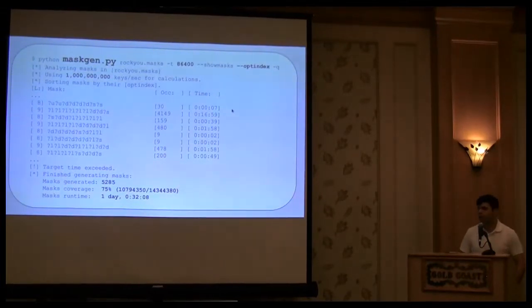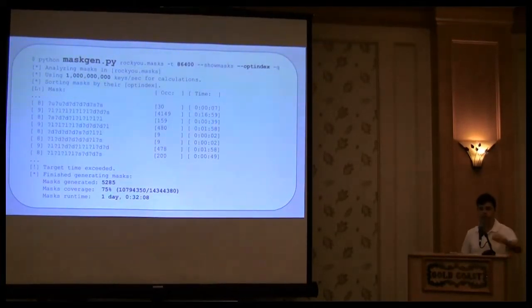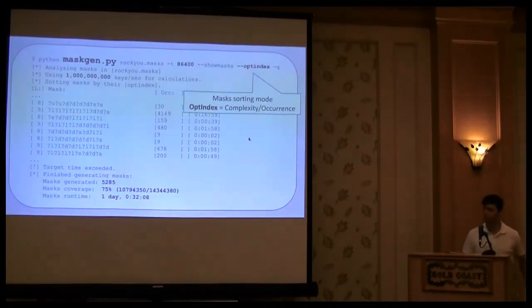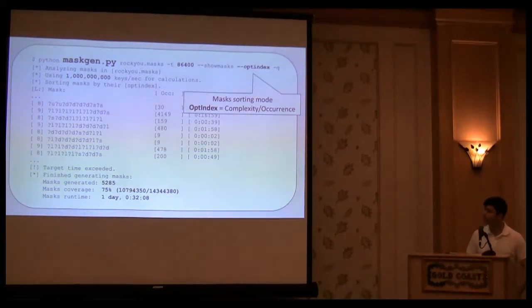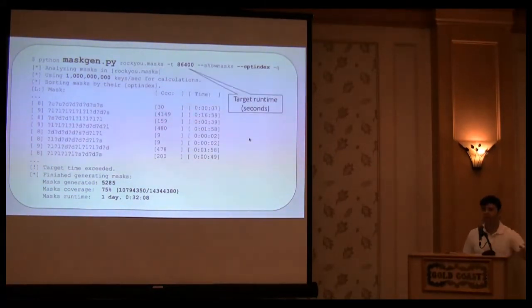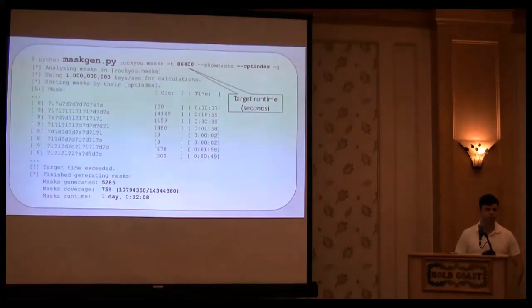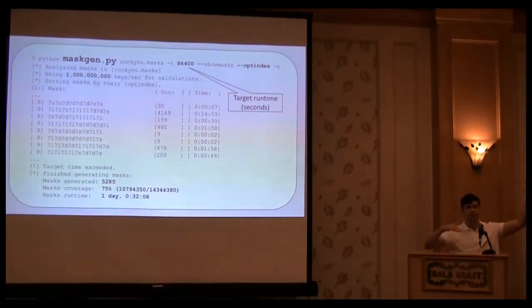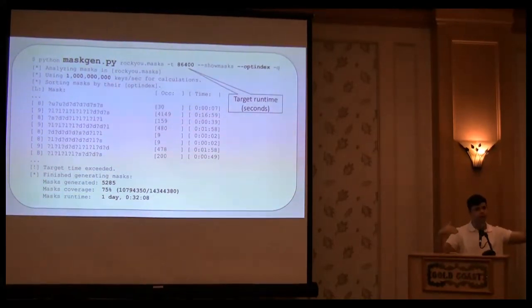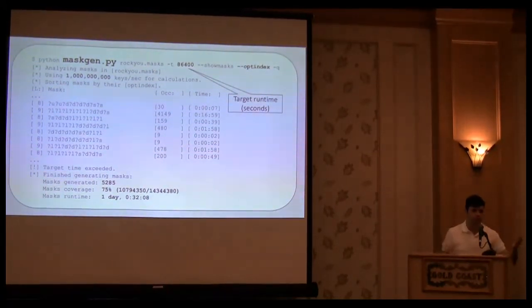At that point, I wrote a different tool called MaskGen. All it is is a sorting tool. The way it works is, you tell it which algorithm you want to sort by, and op_index is just a ratio of complexity versus occurrence. At the same time, if you are in an engagement as a pen tester, you probably don't have 30 days to perform your attack. You can specify how many seconds the maximum runtime is. In this case, for just a day, which is nice for a competition or a pen test.